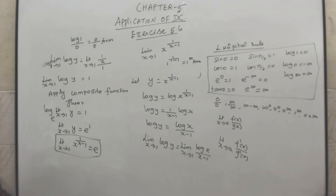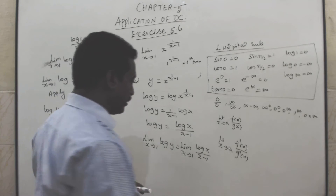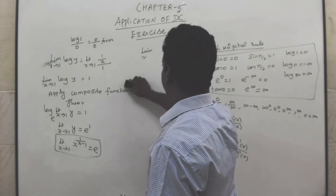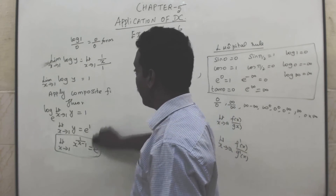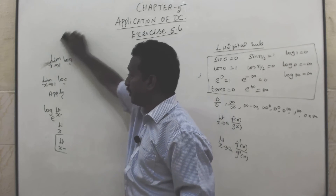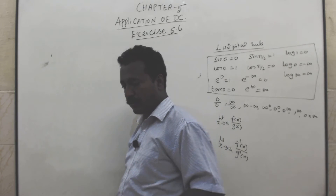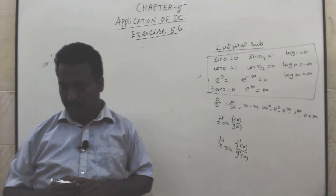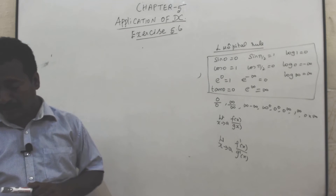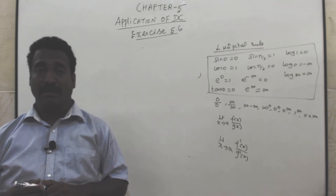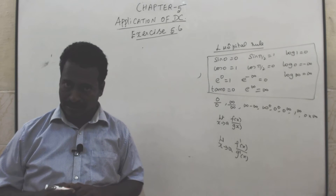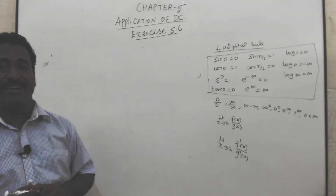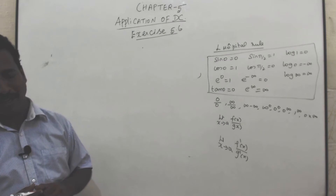Sum numbers 10, 11, and 12 are very very important. In these 4 problems, definitely expect either one 10-mark or 6-mark question. Likewise example 34, 35, and 36. Sum number 11 is a 10-mark question. I will solve sum number 11, and the same way we will try examples 34 and 35.